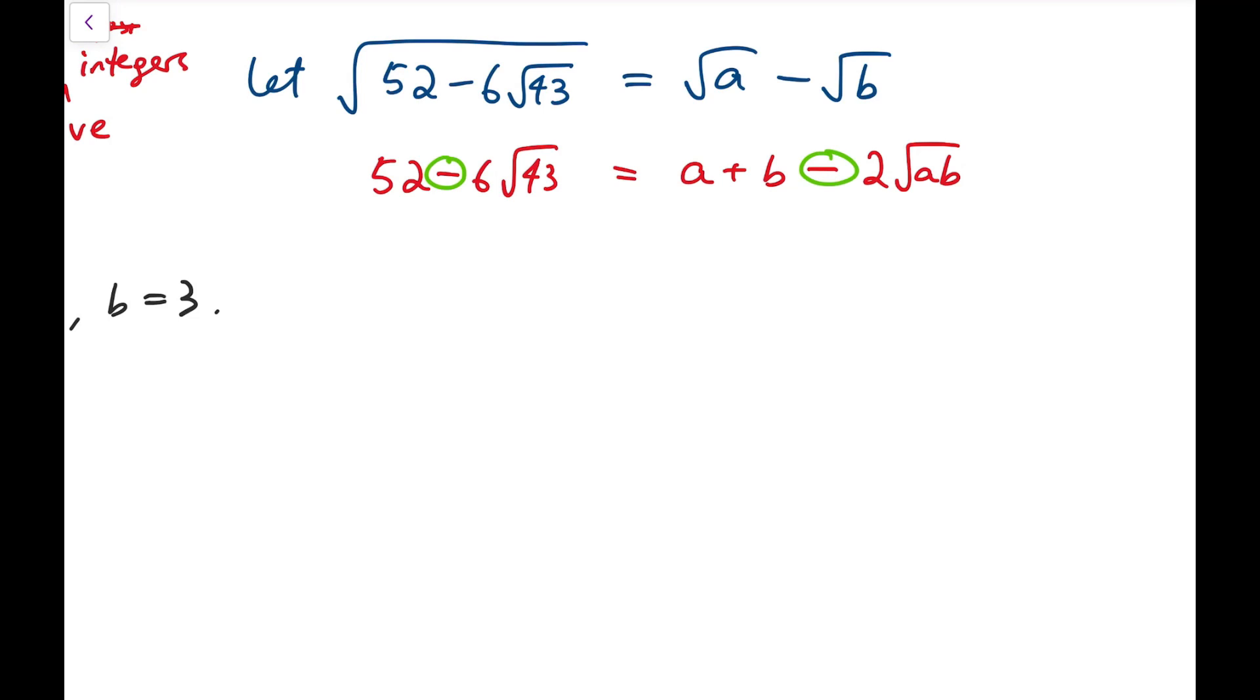So I expect a plus b to be the sum to be 52. Now however, the numbers do not match exactly. We have 2 root ab and 6 root 43 on both sides. So what I'm going to do for the next step is that I'm going to rewrite the left hand side as 52 minus 2 times, now I'm going to move the factor 3 inside the radical side, so it's 43 times 9. So it becomes 2 times square root of 387. Now I can compare like terms.